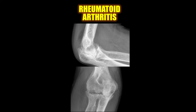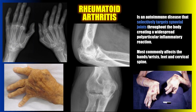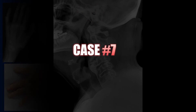Case number six is a good example of rheumatoid arthritis, demonstrating ill-defined eroded articular margins of the radius and capitular surface of the humerus, as well as distension of both the anterior and posterior fat pads, suggestive of an inflammatory arthritis. Rheumatoid arthritis is an autoimmune disease that selectively targets synovial joints throughout the body, creating a widespread polyarticular inflammatory reaction, most commonly affecting the hands, wrists, feet, and cervical spine.